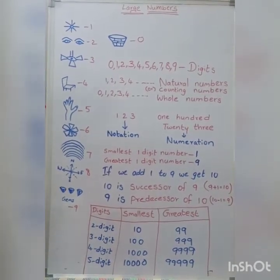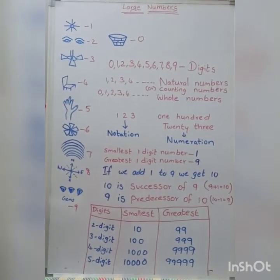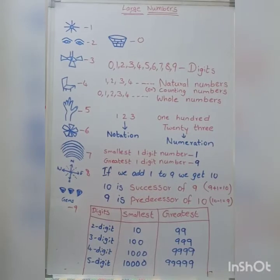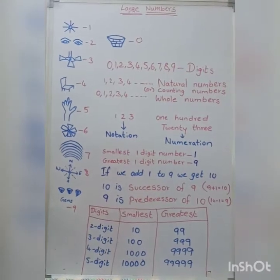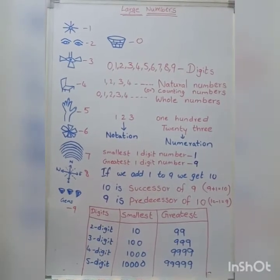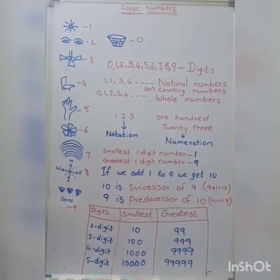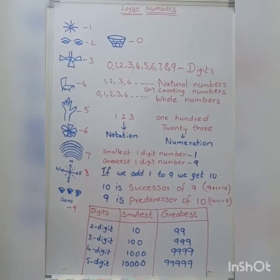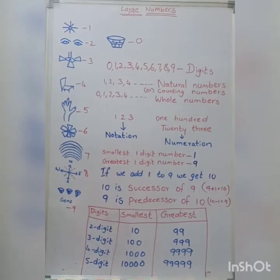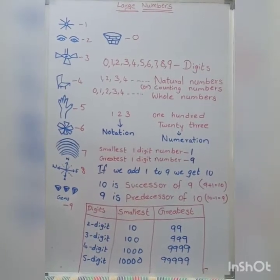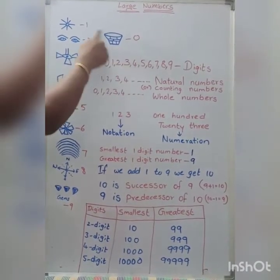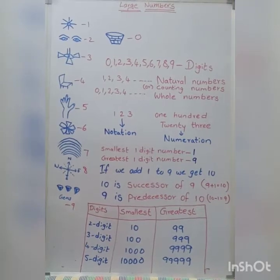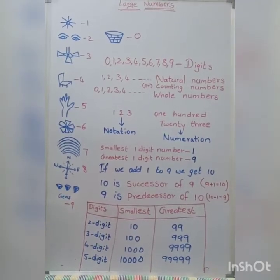Here we are counting the objects. A number is nothing but a symbol of quantity. We can write numbers using digits. Here: 0, 1, 2, 3, 4, 5, 6, 7, 8, 9. These are all called digits.